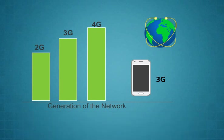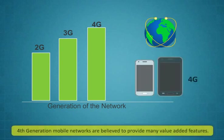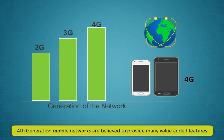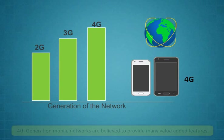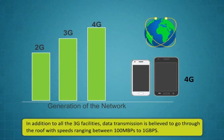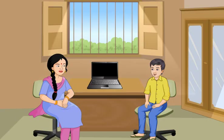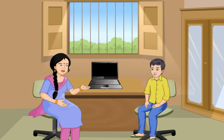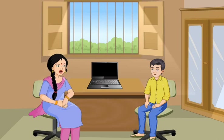3G is the best option for users who need to always stay connected to the internet. 4th generation mobile networks are believed to provide many value added features. In addition to all the 3G facilities, data transmission is believed to go through the roof with speeds ranging between 100 mbps to 1 gbps. Can you now show me how to set up the internet in my mobile phone? Sure Rohan, let me show you how to set up the internet in both a keypad mobile phone as well as an Android phone. Follow these steps carefully.